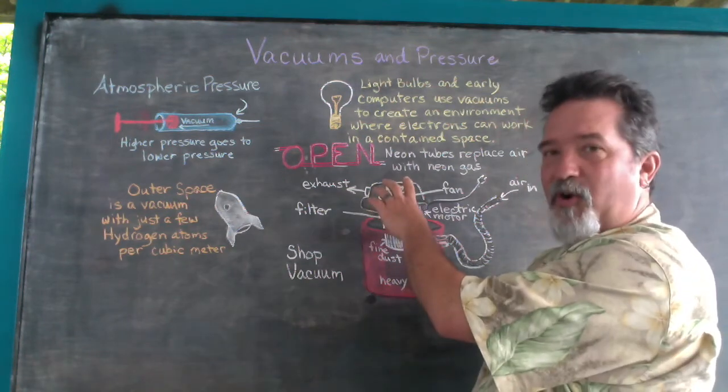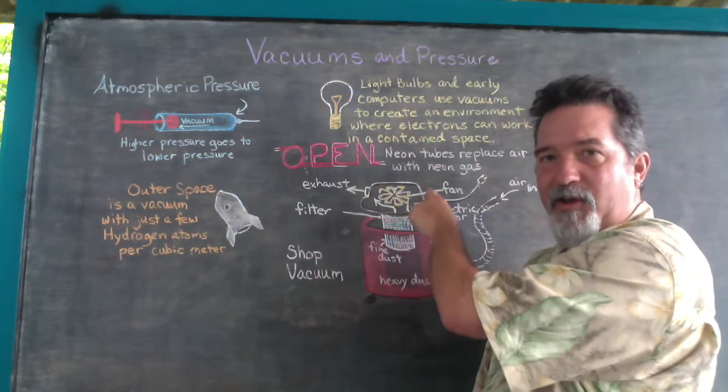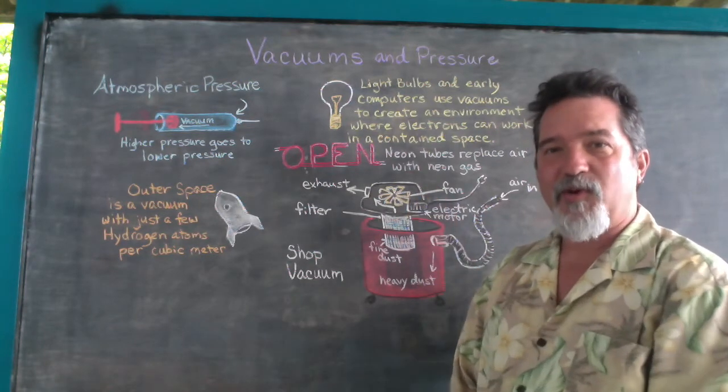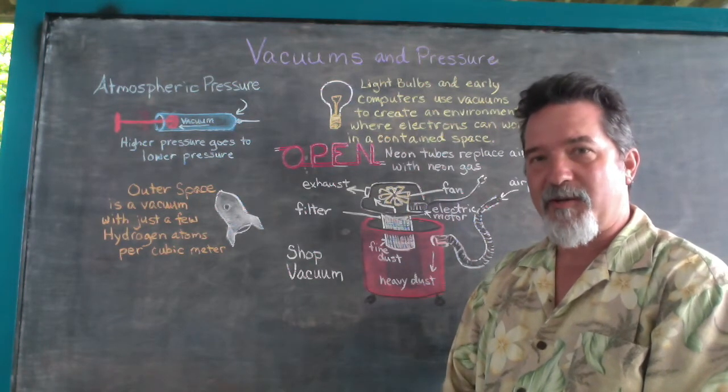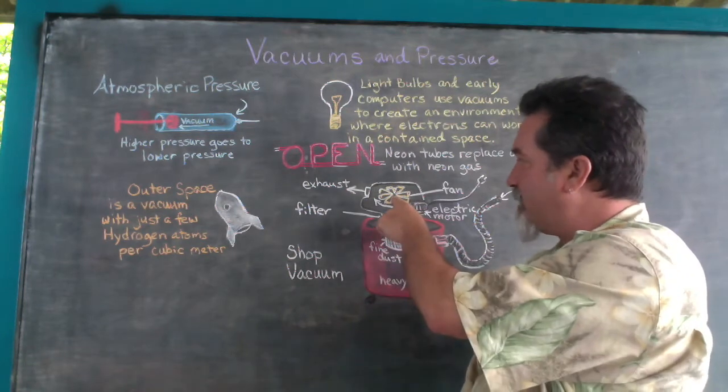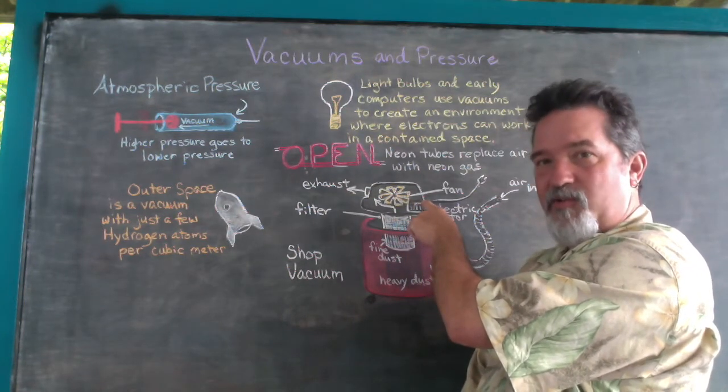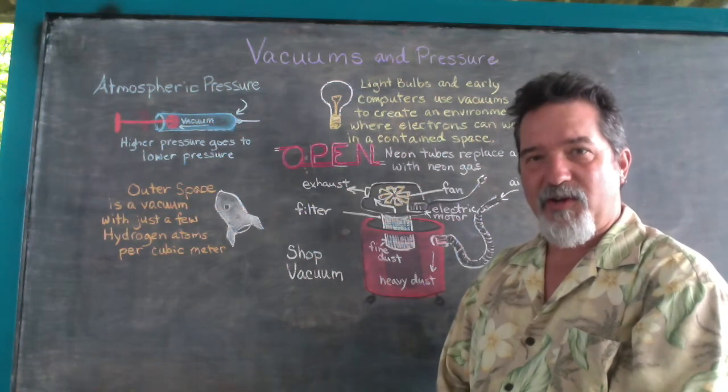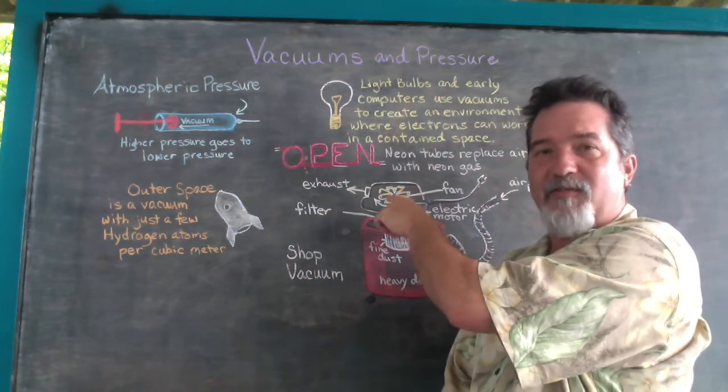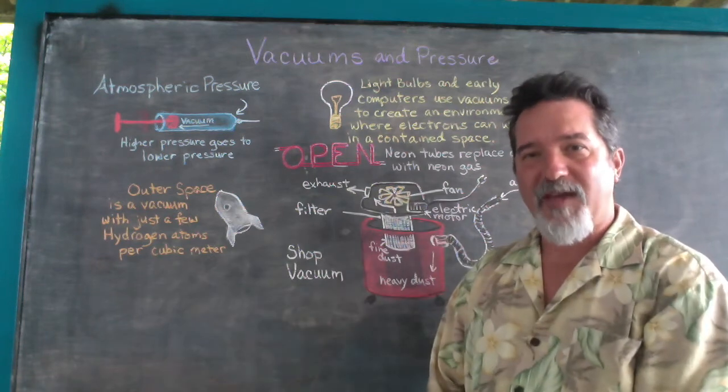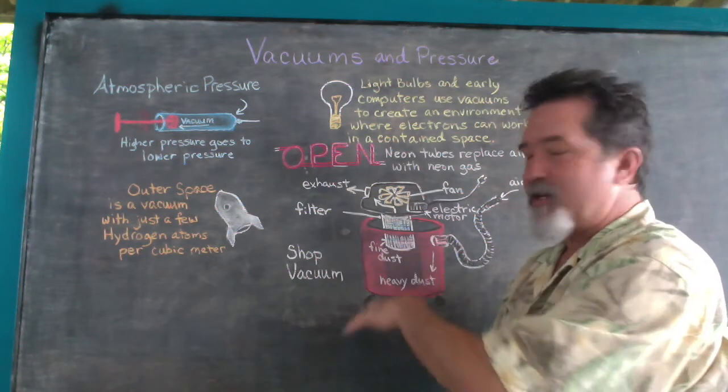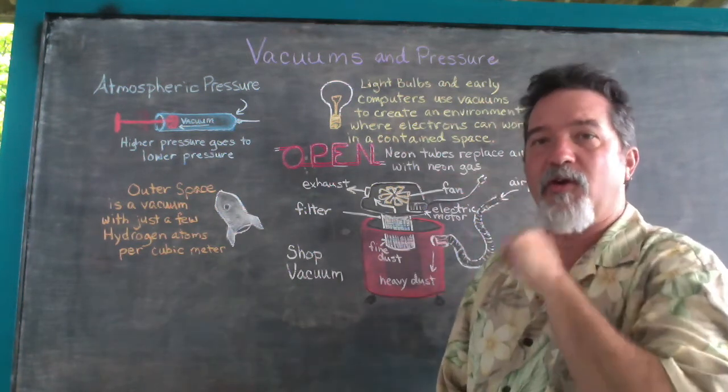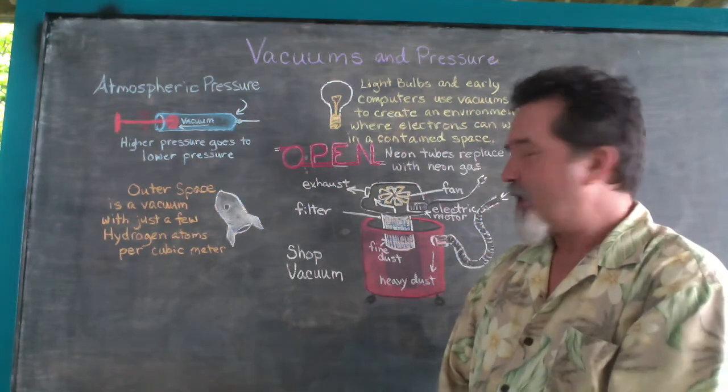Now, the main part of this vacuum is housed in the top part of your shop vac. And it's a fairly simple machine. We have a fan that is operated by an electric motor. When we plug our shop vac in and turn it on, the electric motor is going to now start spinning the fan. And the fan is oriented so that it is going to pull air rather than push air.